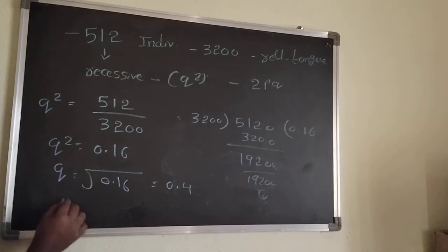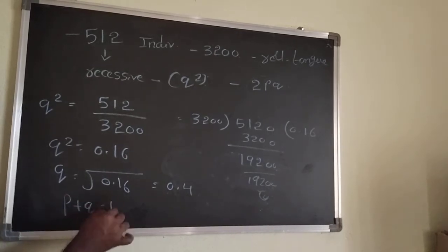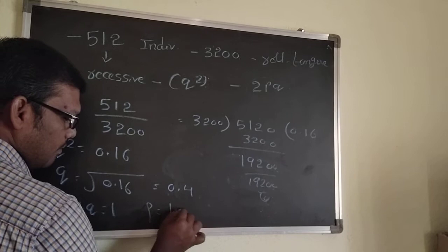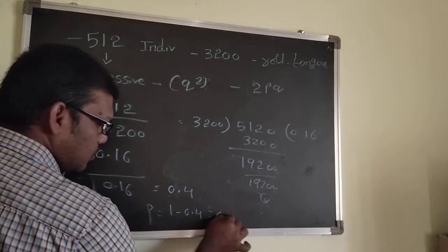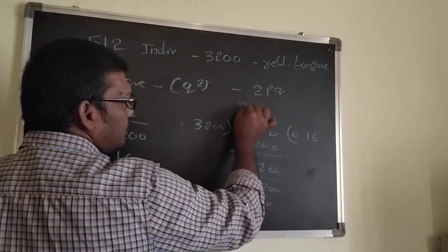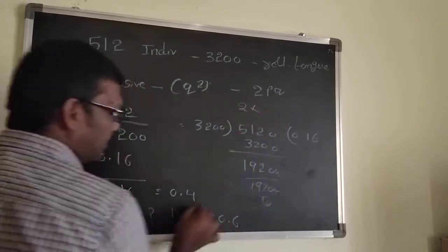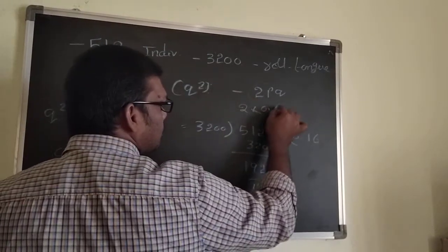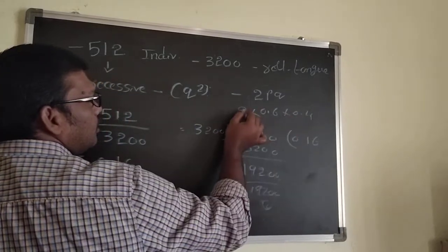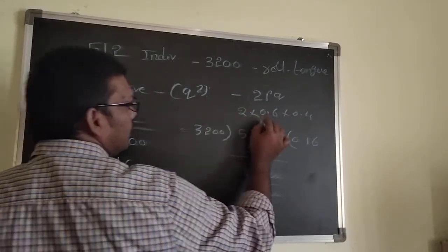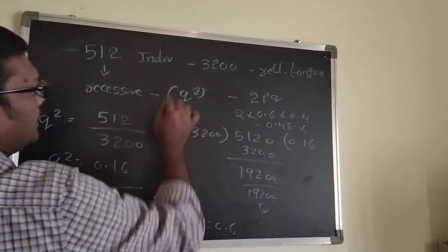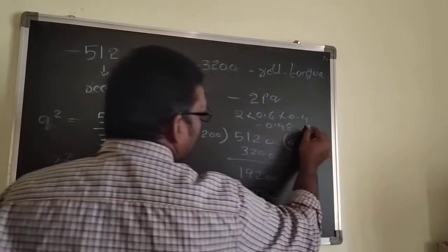Since p + q = 1, p = 1 − 0.4 = 0.6. Now, 2pq = 2 × 0.6 × 0.4 = 0.48.